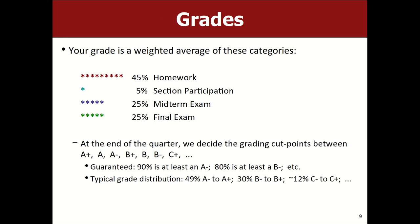Grades are determined by this weighting: homework and section participation count as half your grade, and exams count as the other half. I try to make sure that if you earn 90% of possible points you get at least an A minus, and 80% gets at least a B minus. In practice, roughly 50% of students get A range, 30% get B range, and 20% are spread throughout. I would say the grading curve is fairly lenient in my opinion.